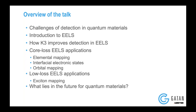I will be following the sequence stated in the outline of the talk. First, we'll go over some of the challenges in understanding electronic correlations in quantum materials. Then I'll introduce what I did with K3 — I basically did electron energy loss spectroscopy — and I'll highlight why K3 is important to understand some of these electronic effects. I'll end my talk with some of the future prospects in quantum materials.